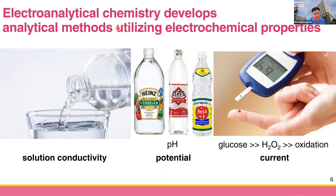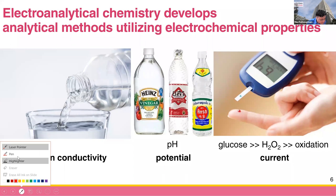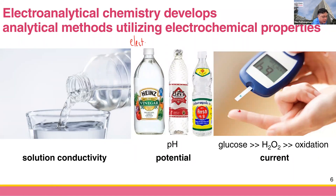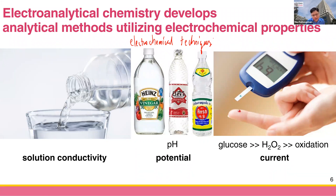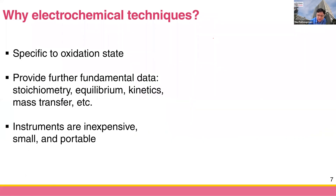So these are our electrochemical techniques. There are many, but they can be categorized easily to reduce confusion. You may wonder why we use electrochemistry when we already have spectroscopy and chromatography. There are about three advantages of using electrochemical techniques.